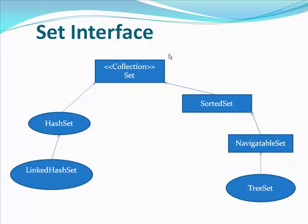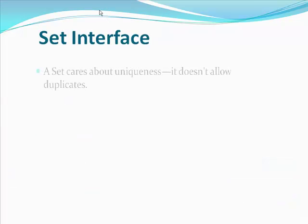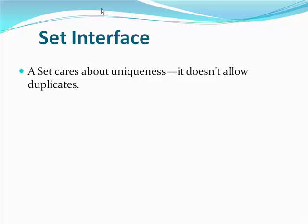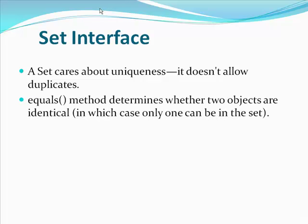The Set interface. The root element is Set. HashSet implements Set, and LinkedHashSet implements HashSet. On the right side is the sorted version: SortedSet extends Set, NavigableSet extends SortedSet, and TreeSet implements NavigableSet. A Set cares about uniqueness — it doesn't allow duplicates. The equals method determines whether two objects are identical, in which case only one can be in the set.